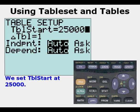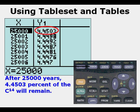Then press second graph, and we can see that after 25,000 years, 4.4503 percent of the original carbon-14 will remain. That saved us a lot of effort.